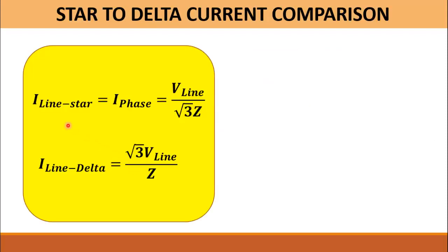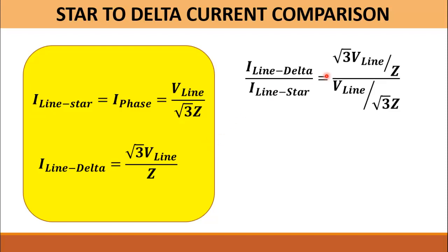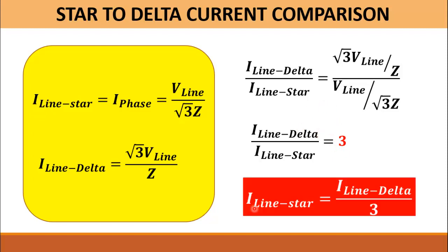We now have both the line currents of star and delta configuration. We are going to divide both currents and we will get the answer which is equal to 3. So by rearranging this equation, the line current in star configuration is equal to the line current in delta configuration over 3. It means that the current in the star configuration is three times less than the current in the delta configuration, and this is what I wanted to prove — that is why we use star delta configuration.